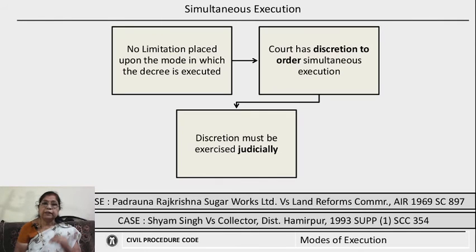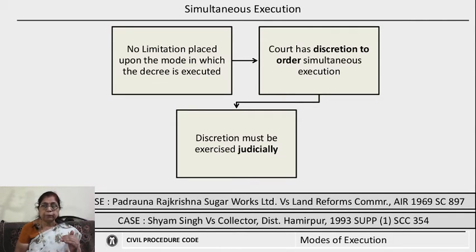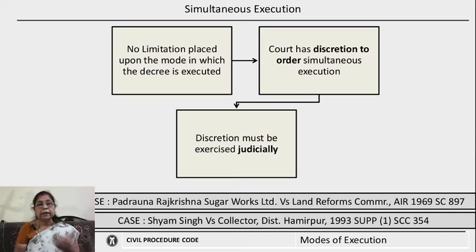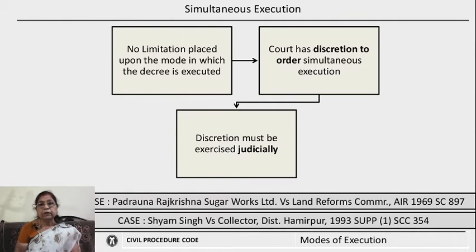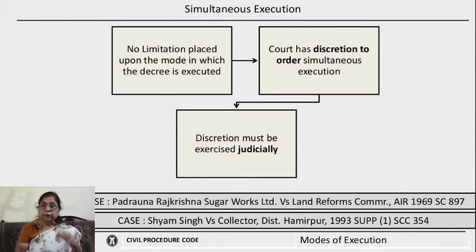The question of whether simultaneous execution can be ordered arises — that is, whether the court can allow more than one mode at a time. For instance, a decree holder might ask for attachment and sale of movable property, and simultaneously for immovable property, along with arrest and detention. There are cases holding that there is no limitation placed upon the mode in which a decree is executed, and that the court has complete discretion to order simultaneous execution, as section 51 does not mandate any single mode exclusively.